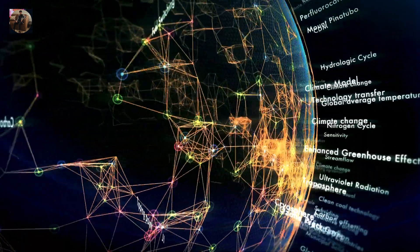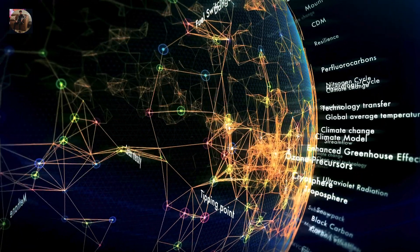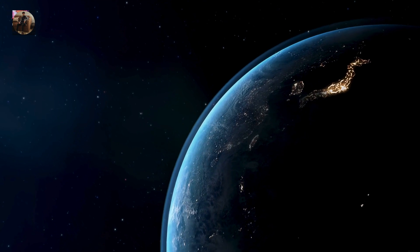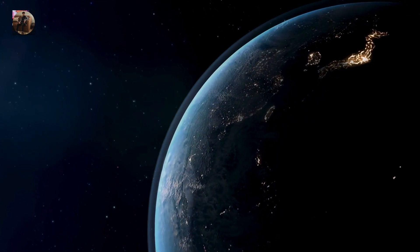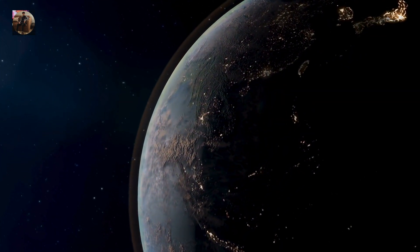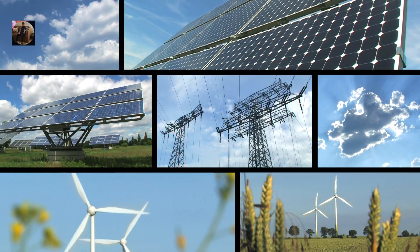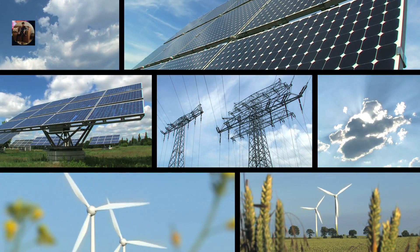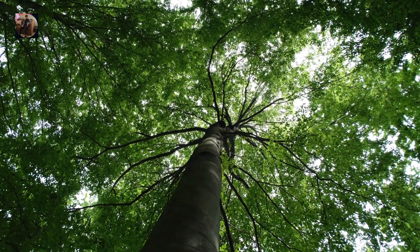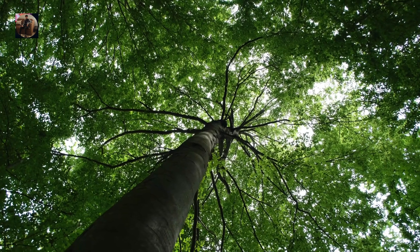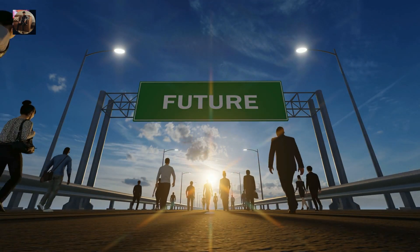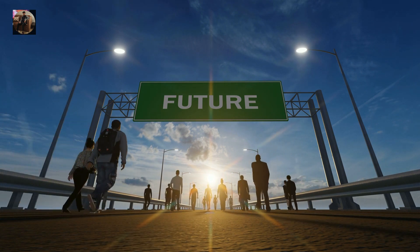Now the good news: we can take action to protect our atmosphere and combat climate change. But first, we need to understand how our actions impact this delicate system. Protecting the atmosphere starts with small everyday actions: using renewable energy, reducing waste, and planting trees are just a few ways we can reduce our carbon footprint. Supporting policies that protect the environment is also crucial.